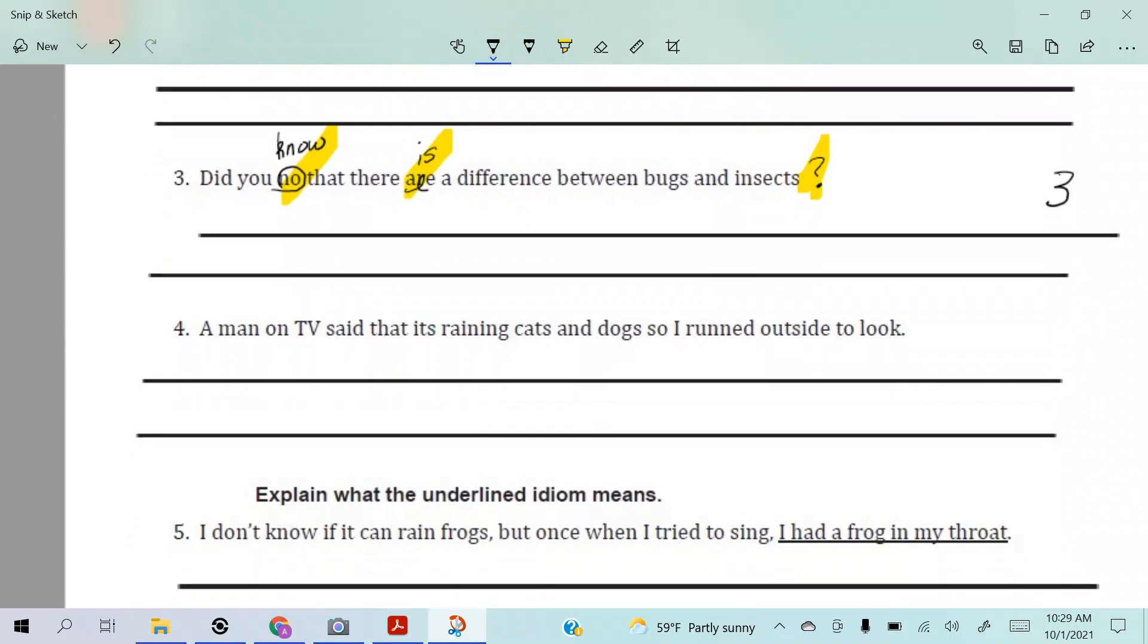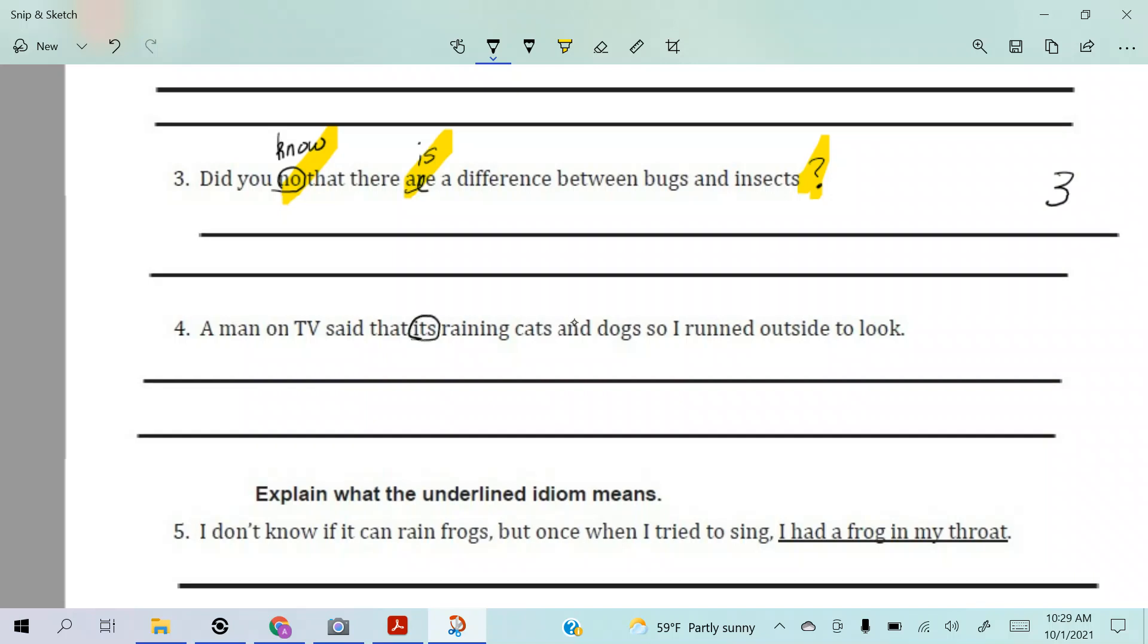Okay, a man on TV said that it's raining cats and dogs so I run outside to look. Okay, well we went over this specifically right here with it's - that's a contraction so we need that apostrophe. A man on TV said that it's raining cats and dogs. We also talked about this - what comes before that conjunction? We would never say that. We need the irregular verb.